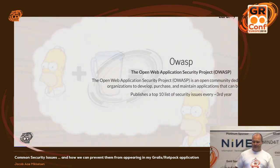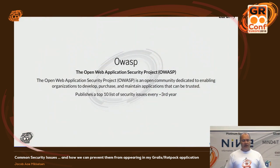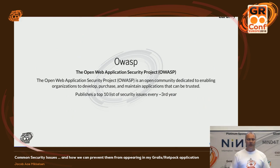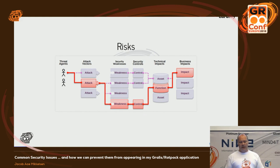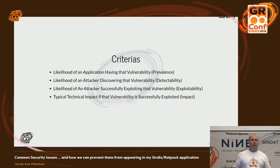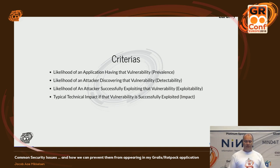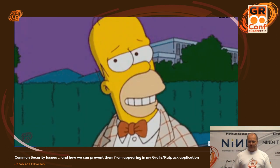OWASP is the Open Web Application Security Project, and roughly every three years they publish a top-10 list of the most frequently occurring and serious problems within the security space in web applications. They consider quite a different number of factors: the attack vectors, whatever weaknesses we have, whatever security controls we have, and the technical and business impact. The four criteria are: prevalence of the vulnerability, detectability by an attacker, likelihood of successful exploitation, and the typical technical impact.